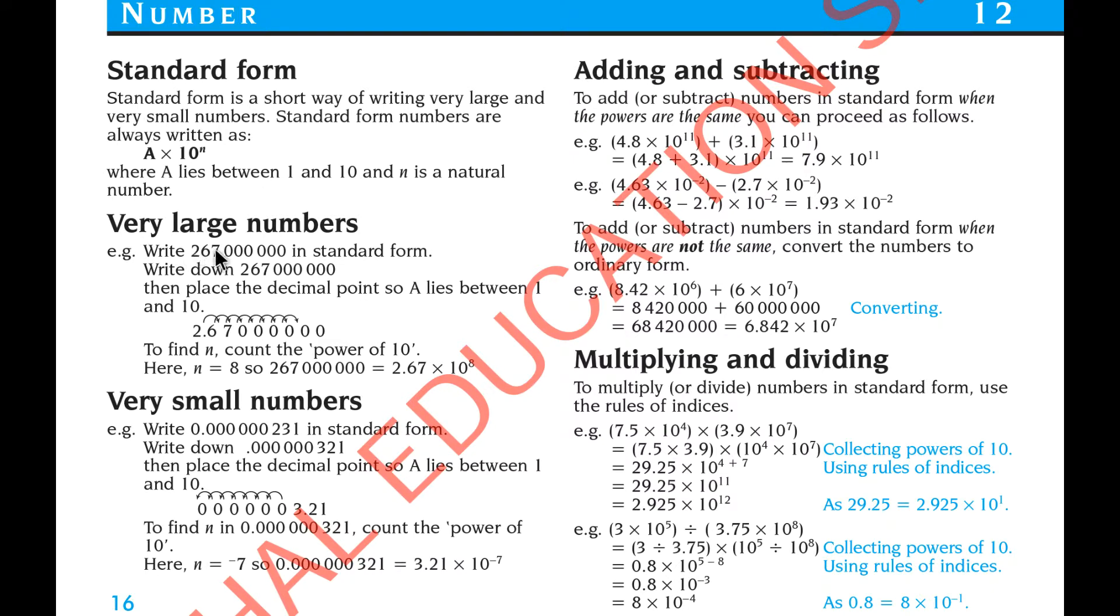Write 267 million in standard form. So this is the ordinary form, then they ask us to write in the standard form. So write down 267 million, then place the decimal point A lies between 1 and 10. So it should be 2.67 multiplied 10 to the power 8.